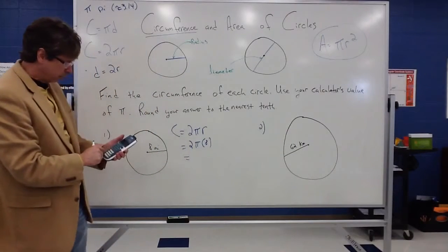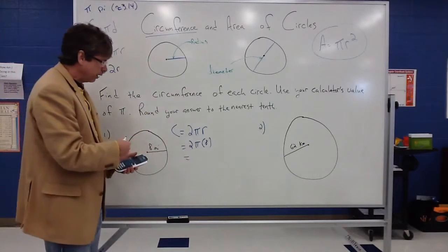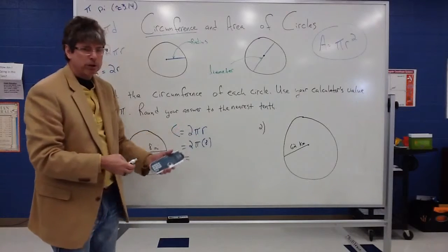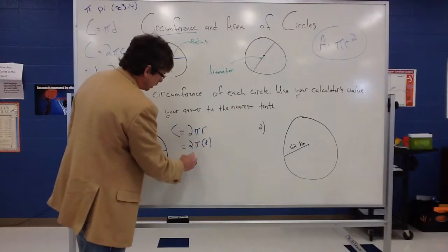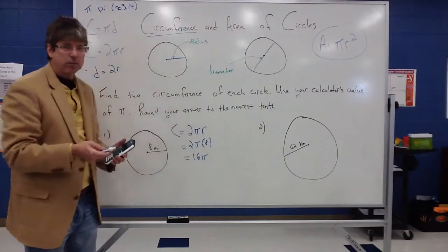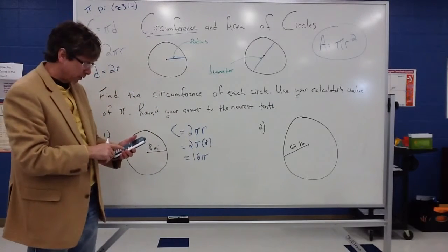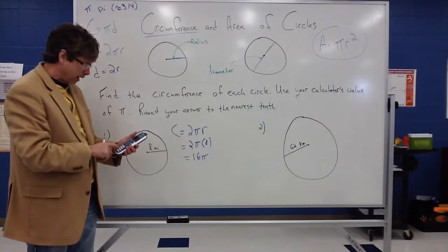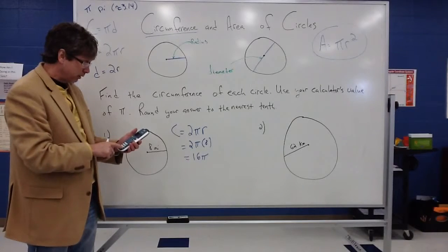So from here, I can put this into the calculator. But also note that this is just a multiplication, and I can go 2 times 8 and get 16 pi. And then I can let the calculator change 16 pi into a decimal for me. So I can input 16 pi into the calculator, hit enter.